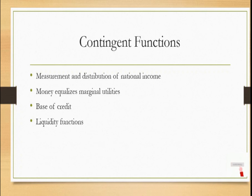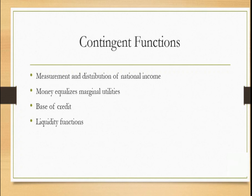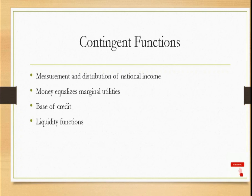The next point is the liquidity function. Money is a 100% liquid asset, which indicates that any person at any point of time can utilize money. For example, if I have 1,000 rupees, 24 by 7 I can utilize that 1,000 rupees across the length and breadth of the country. Money is 100% liquid and 100% acceptable to each and every citizen.